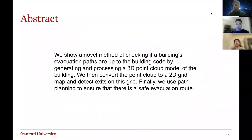First, a general summary of our project is that we show a novel method for checking if a building's evacuation paths are up to building code by generating and processing a 3D point cloud model of a building. We convert this point cloud to a 2D grid map and detect all the exits on the grid. Finally, we use a path planning algorithm to ensure that there's a safe evacuation path within the building.